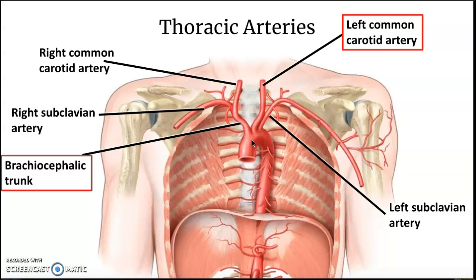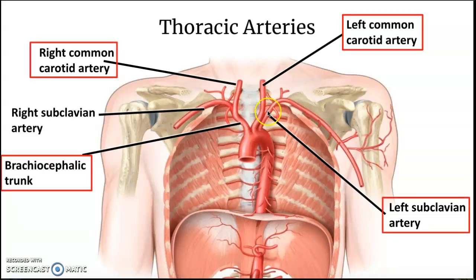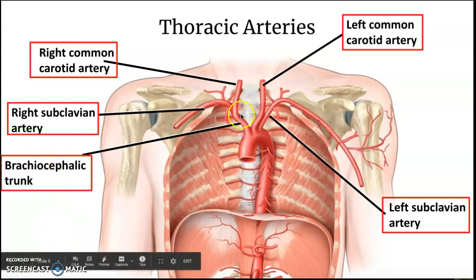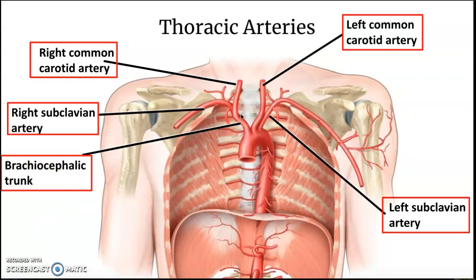The other arteries branching off the ascending aorta are the left common carotid artery and the left subclavian artery. From the brachiocephalic trunk you have the right common carotid artery and the right subclavian artery. So the left common carotid and the left subclavian branch right off the ascending aorta, but the brachiocephalic trunk comes off the ascending aorta for the right side — the right common carotid and the right subclavian.